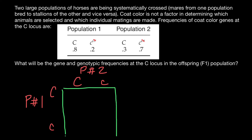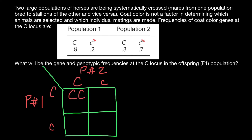Here is our Punnett square. Inside this Punnett square are going to be the frequencies of generation F1. The frequency of the dominant allele C in population one is 0.8, and the frequency of the recessive allele c in population one is 0.2. The frequency of the dominant allele in population two is 0.3, and the frequency of the recessive allele in population two is 0.7.